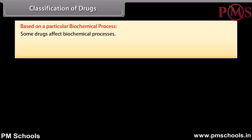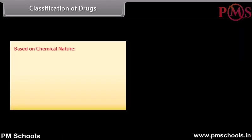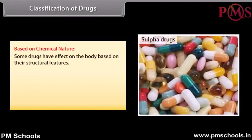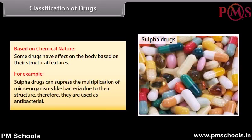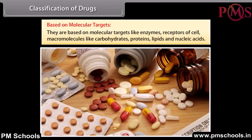Antihistamine drugs suppress the action of histamine, which causes inflammation in the body. Based on chemical nature, some drugs have an effect on the body based on their structural features. For example, sulphur drugs can suppress the multiplication of microorganisms like bacteria due to their structure, and therefore they are used as antibacterial agents. Based on molecular targets, drugs act on molecular targets like enzymes, receptors of cells, and macromolecules like carbohydrates, proteins, lipids, and nucleic acids.